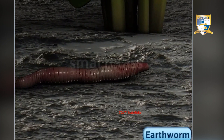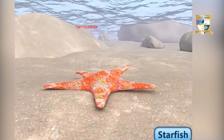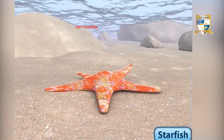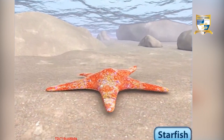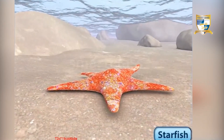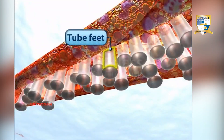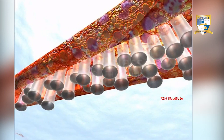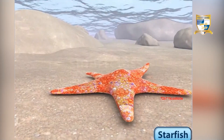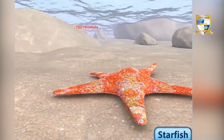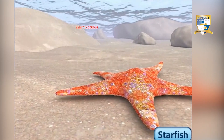Starfish are water animals that also show crawling movement. Starfish move with the help of tube-like structures called tube feet. Each tube foot ends in a sucker that helps the starfish adhere to the surface and aids in locomotion.